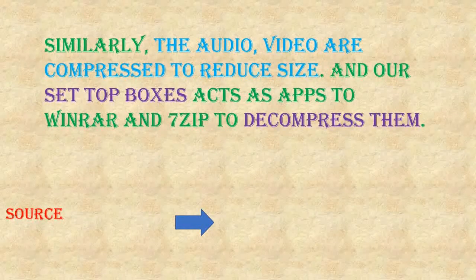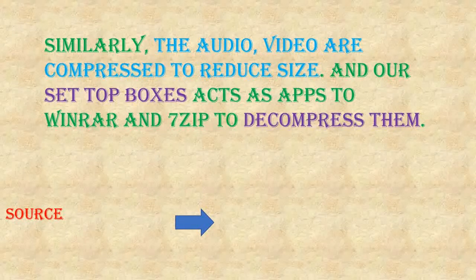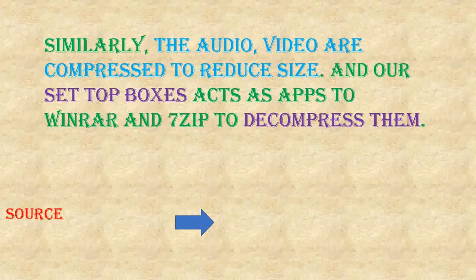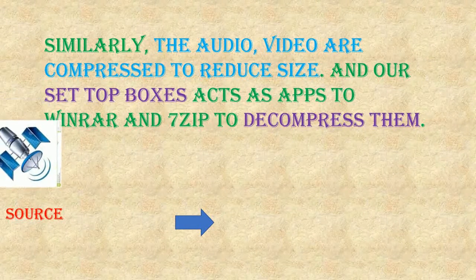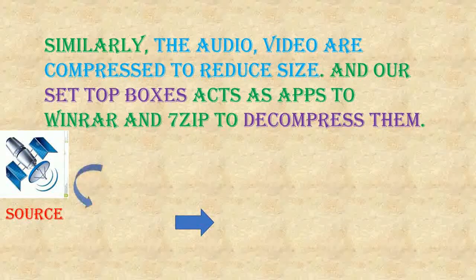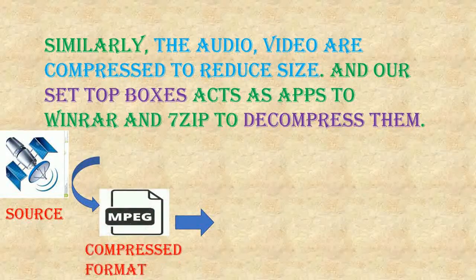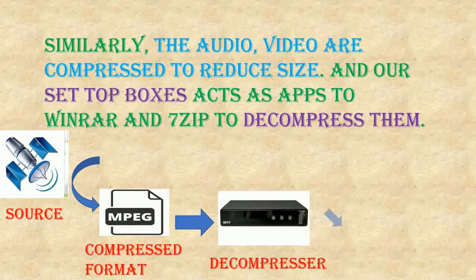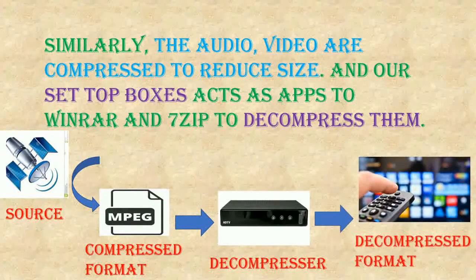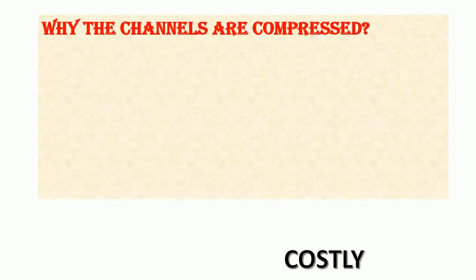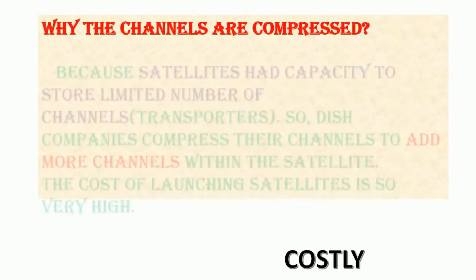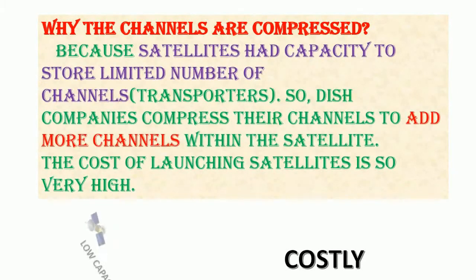If 10 megabytes is decompressed using a decompressor, we will get 50 megabytes of files. Similarly, audio and video are compressed to reduce size. Set-top boxes act like WinRAR and 7-Zip to decompress them. The compressed MPEG format received from the satellite is decompressed by the set-top box, and we get the video and audio on your TV.